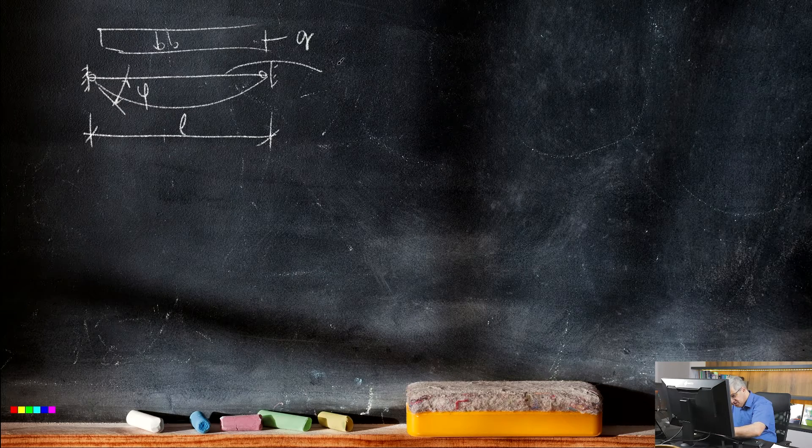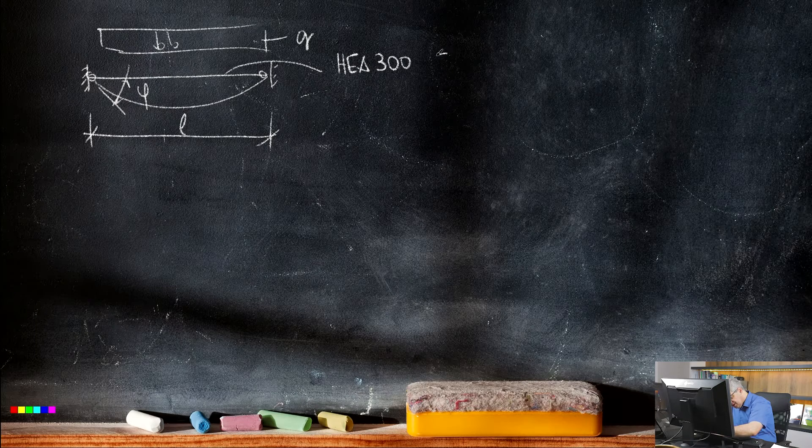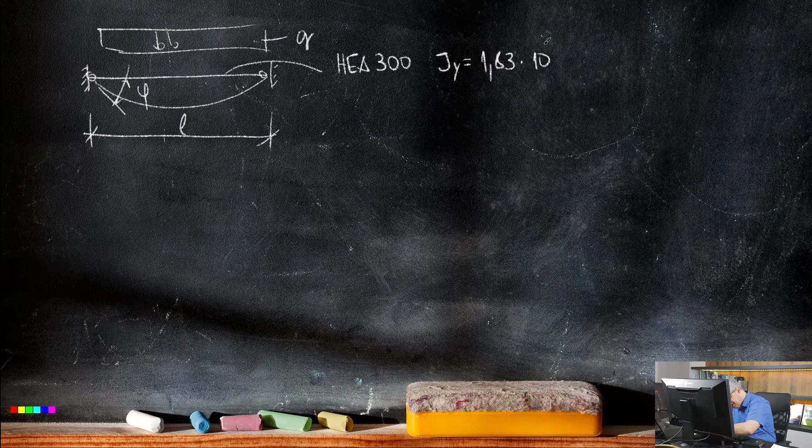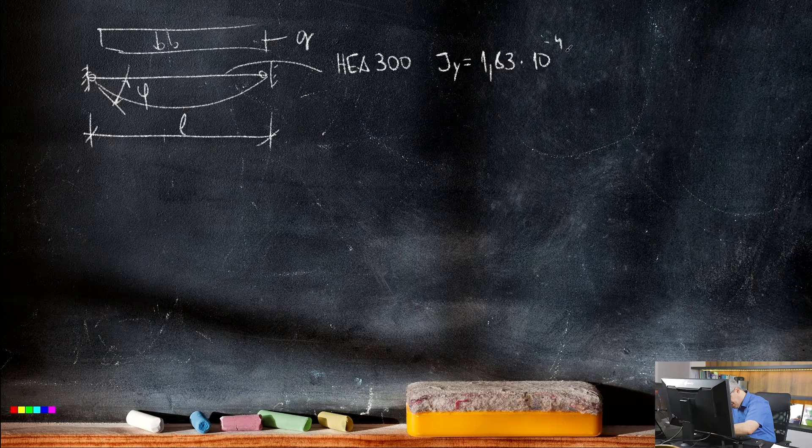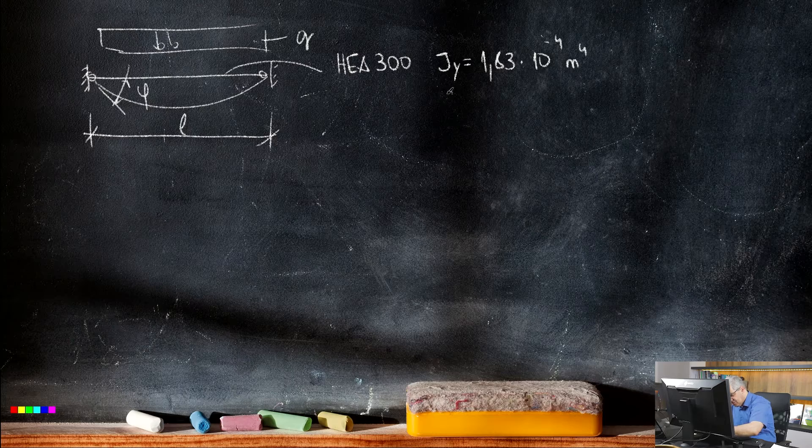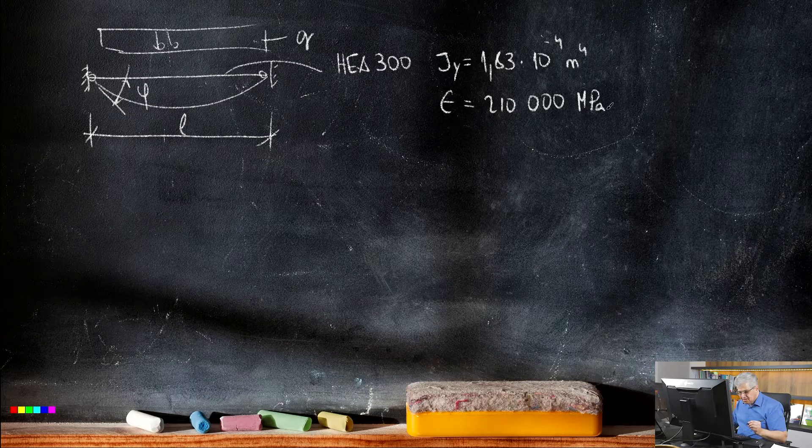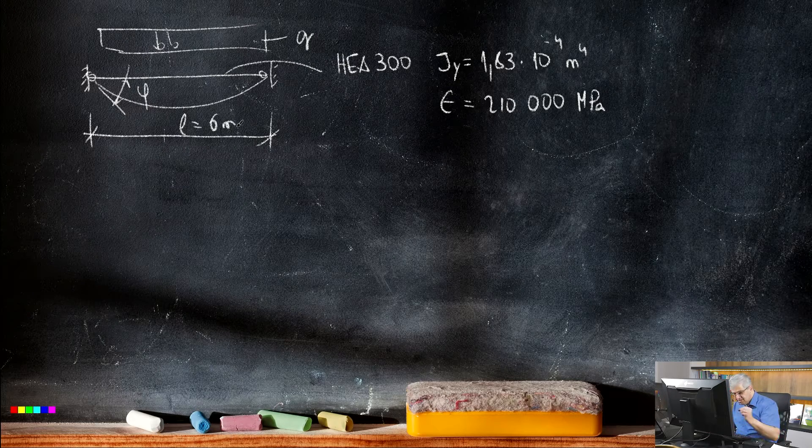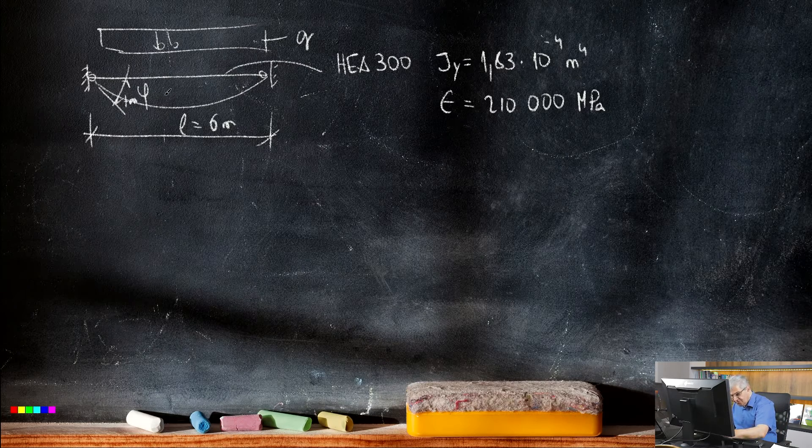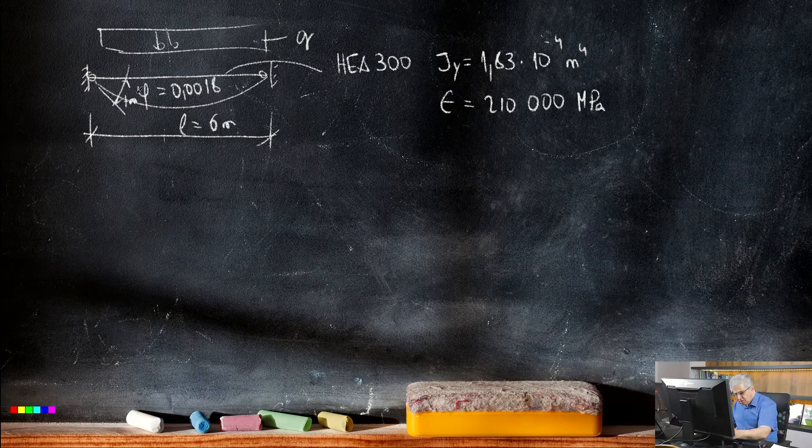We have some length L. Our beam is HEA 300 and the moment of inertia is 1.83 times 10 to the power of minus 4 meter to the power of 4. And then we have also the material which is 210,000 MPa for steel. And the length is 6 meters and the load we will calculate. So we have this value - tangent phi or phi is 0.0018. What we know for this phi?